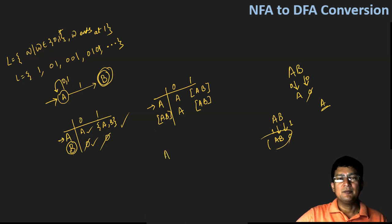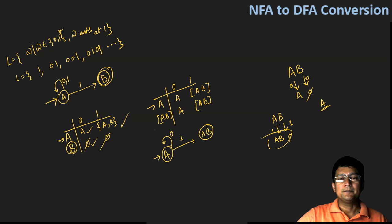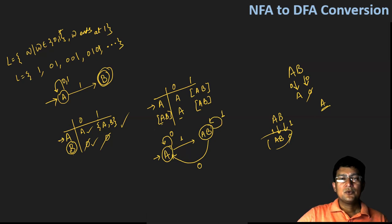And then I will draw the DFA diagram. With state number A and symbol zero, I will go to the new state which is the AB state. In the AB state on getting symbol zero, I will move to state number A, and with AB on symbol one, I will remain at AB state only. So this is the DFA for the given NFA.